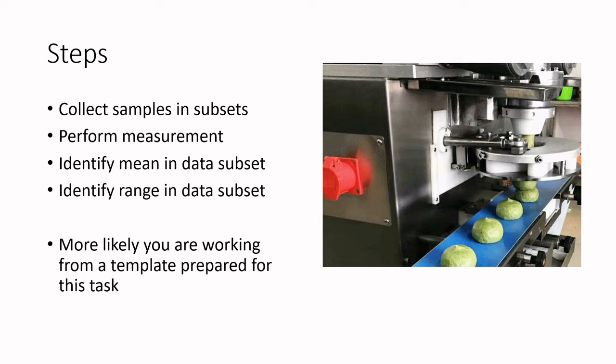If I wanted to find out why the weights were showing up as overweight, I would want to go out on any standard manufacturing run and collect some product. I can do it in a non-destructive way — I'd have my balance on the line and just sub-sample off the line quickly, then put the product back on the line in a sanitary way, provided there's no defect to the product. Collect samples and subsets, perform the measurement by weighing the product, identify the mean in that data subset, and identify the range in the data subset.